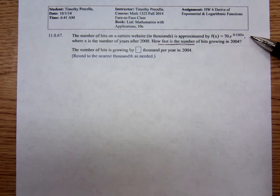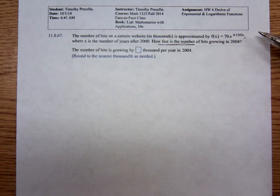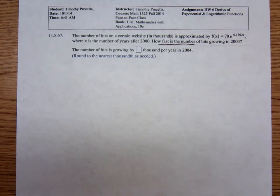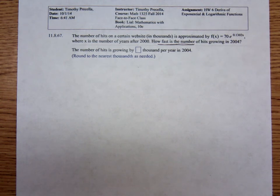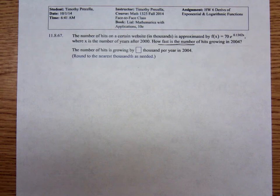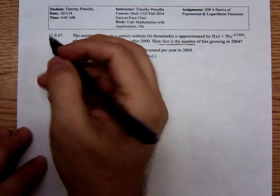That means we need to differentiate that 70e to the 0.1302x. We need to recall our derivative formula.